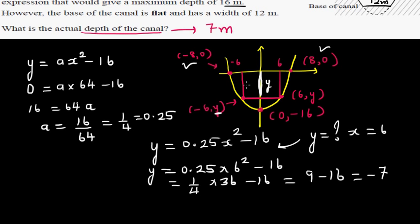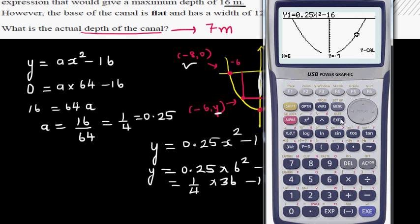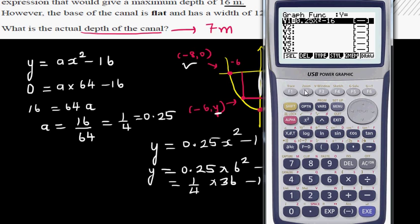So let me show this on the calculator. I have already entered the equation. So let me type it in again. So y is equal to 0.25 x squared minus 16. You should understand the scale should be minimum from minus 8 to 8 on the x axis.